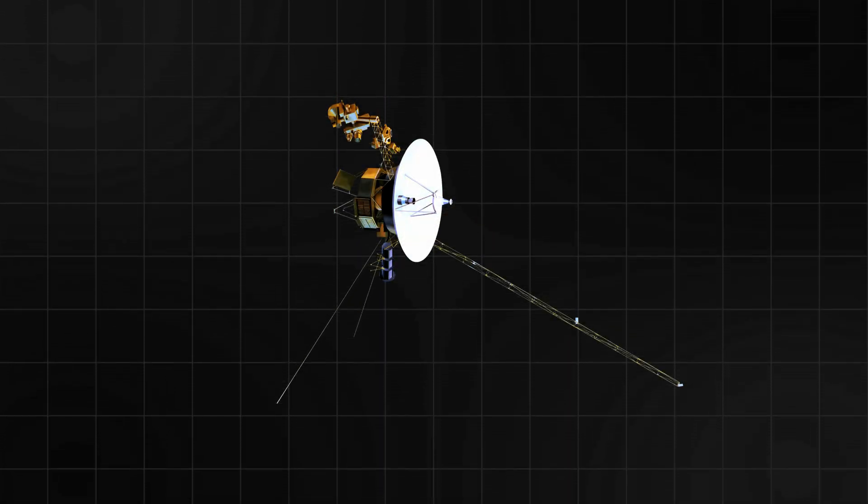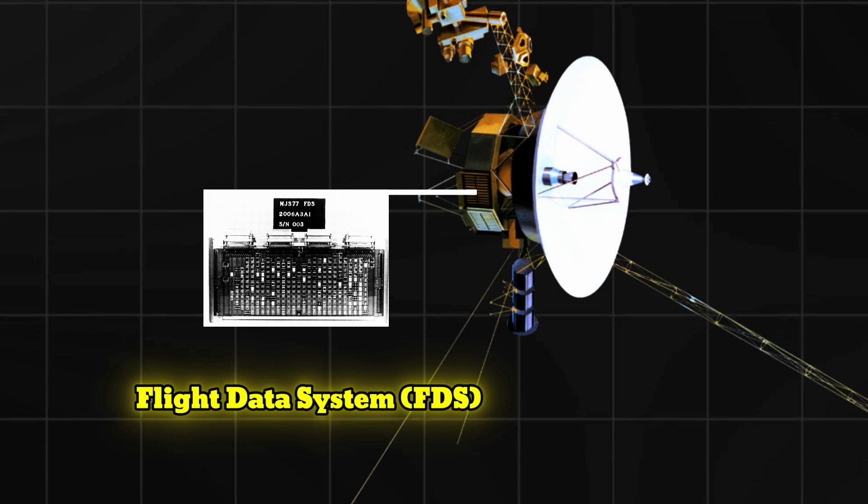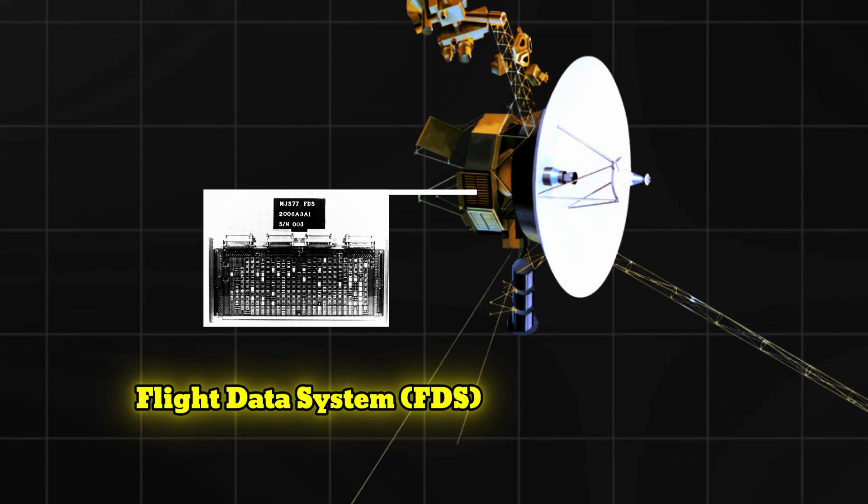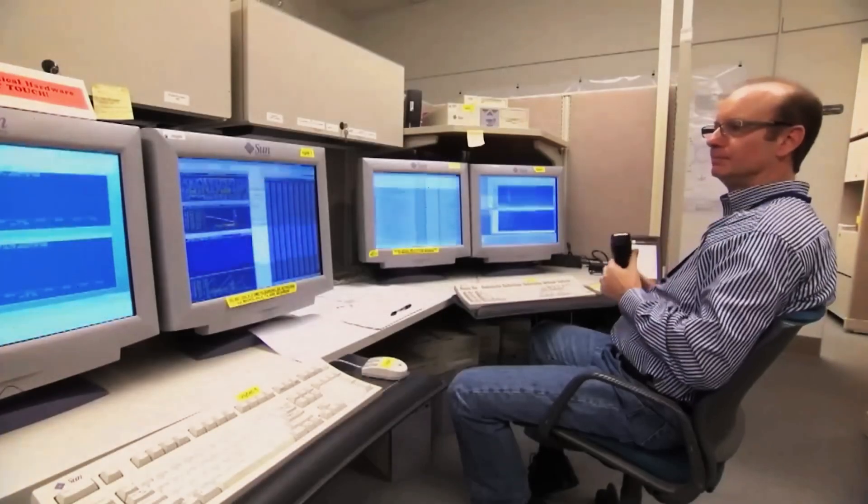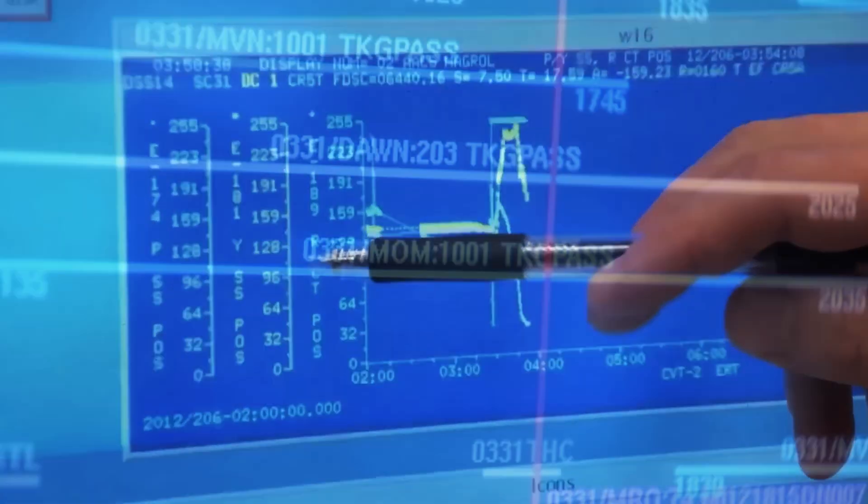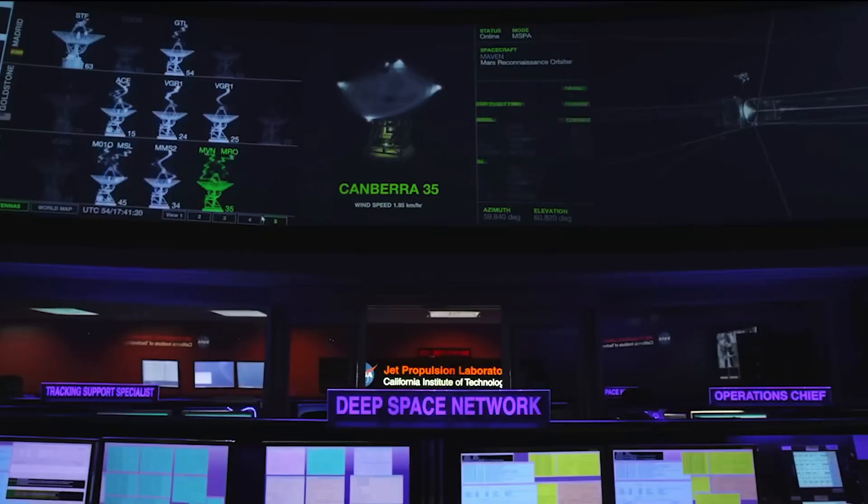The culprit was a memory failure in its onboard flight data system, FDS, threatening permanent communication loss. However, the dedicated team of scientists refused to accept defeat. They took a bold step, reallocating code to different sections of the probe's memory.